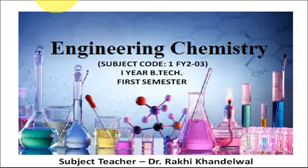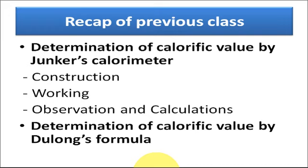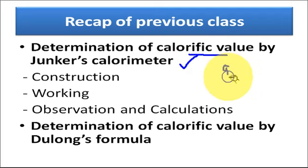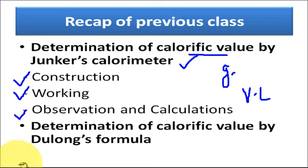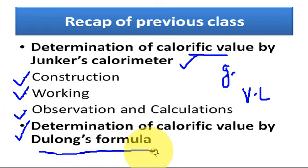Hello students, welcome to the new lecture of E-Lecture Series. Before starting today's lecture, just have the recap of the previous class. In the last class, we discussed about the determination of calorific value by Junker's calorimeter, which is specifically used for the determination of calorific value of gaseous fuel and volatile liquid fuels. We learned about the construction, working, and calculation of calorific value in Junker's calorimeter, and the determination of calorific value by Junker's formula.